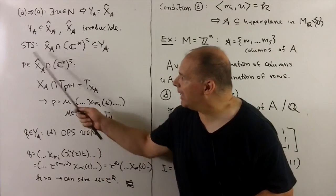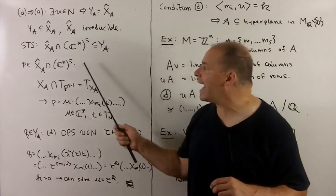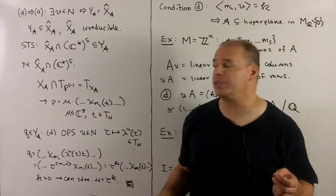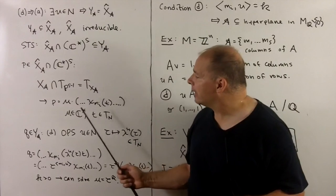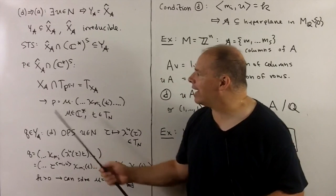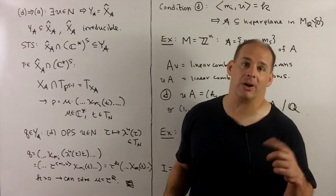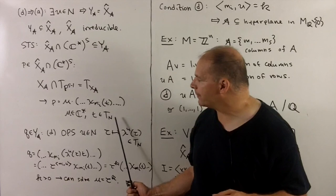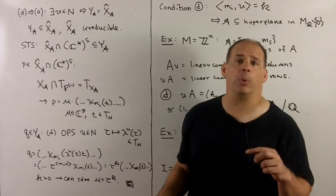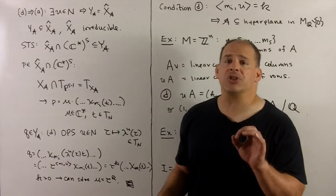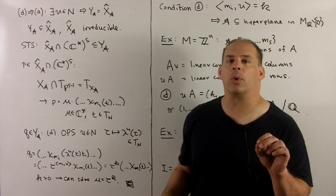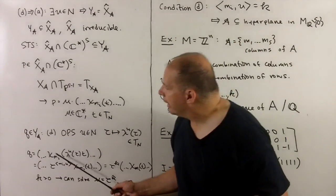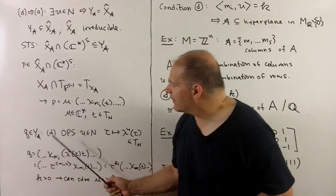Now, if we pick p in the cone over x sub a intersect C star to the s, since x sub a intersect the torus for projective s minus 1 space is just the torus for x sub a, we have that p can be written as mu, where mu is a complex number not zero, times phi sub a applied to t, where t is in t sub a. Now, we want to match this to a point on y sub a, and our first guess isn't going to be quite exactly there. So we're going to make a first guess and then adjust it to make it equal.